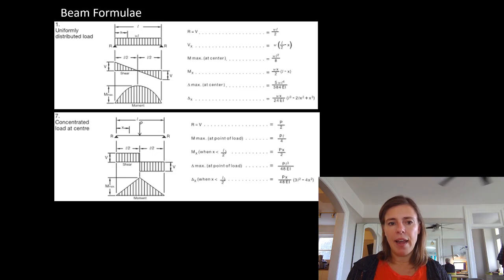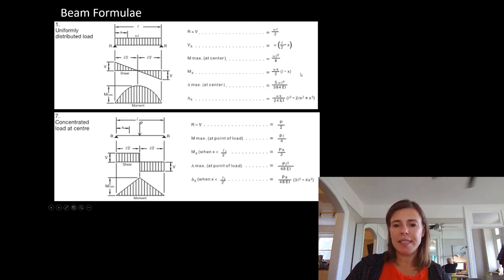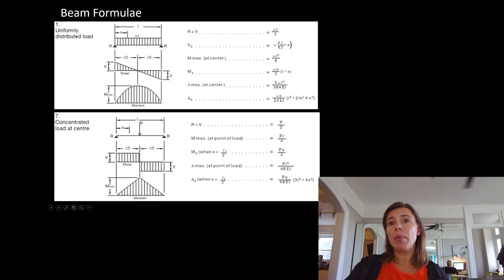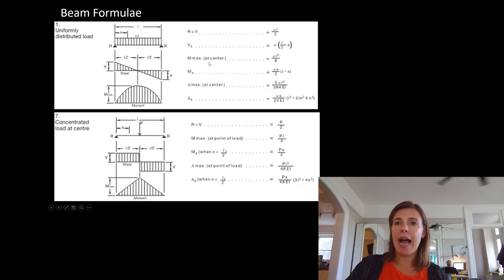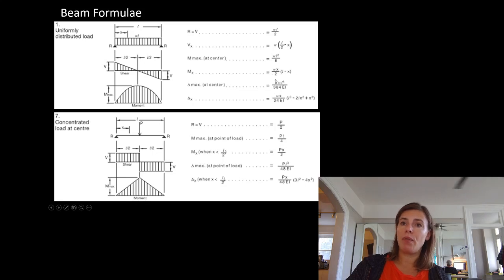If these are things we calculate again and again, maybe there are little tables that have already drawn out everything I just made you calculate. Here's the uniformly distributed load table — it looks exactly like what we just spent 20 minutes calculating. Our reaction equals our shear equals WL/2 — exactly what we calculated. They also give V at any point X as W(L/2 - X) — same equation with W pulled out. We had M-max at center as WL²/8 — exact same thing. And the moment at any X along its length, we had WLX/2 minus WX²/2 — they've just pulled the WX/2 outside the brackets. Exact same thing.